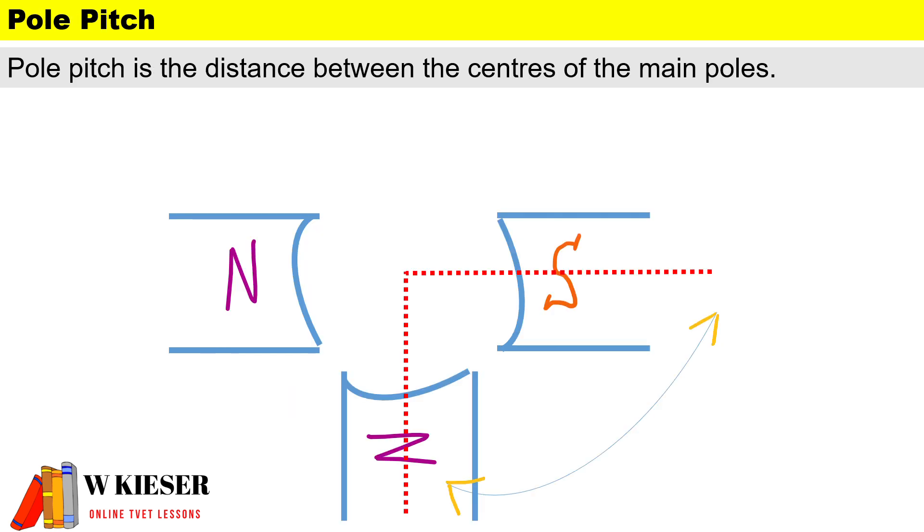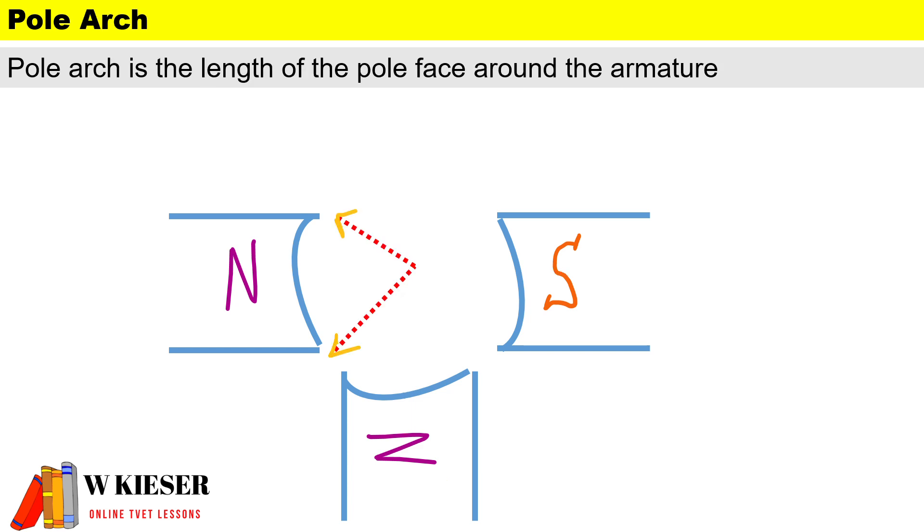The difference between pole pitch and pole arc: pole pitch is the distance between the centers of the main poles, and pole arc is the length of the pole face around the armature. The face of a pole has two sides to it.